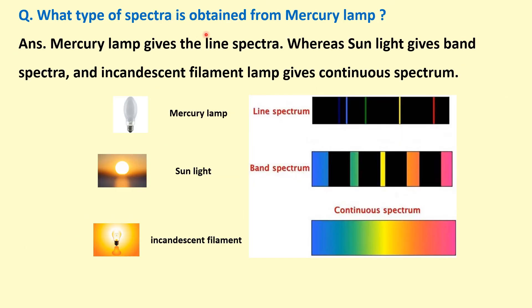What type of spectra is obtained from a mercury lamp? A mercury lamp gives us line spectra. Sunlight gives us band spectra, with different bands of color, whereas a normal incandescent filament lamp gives us continuous spectra.